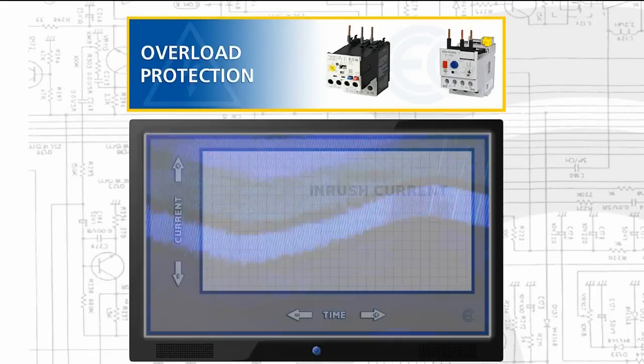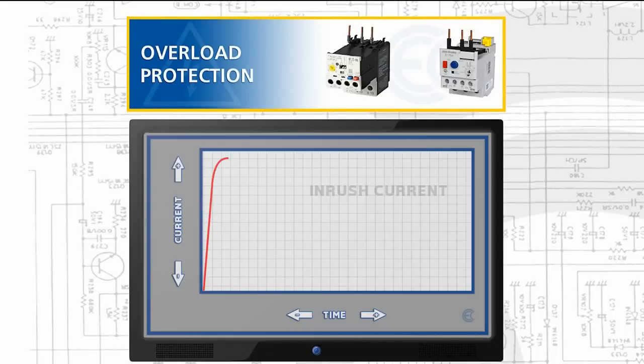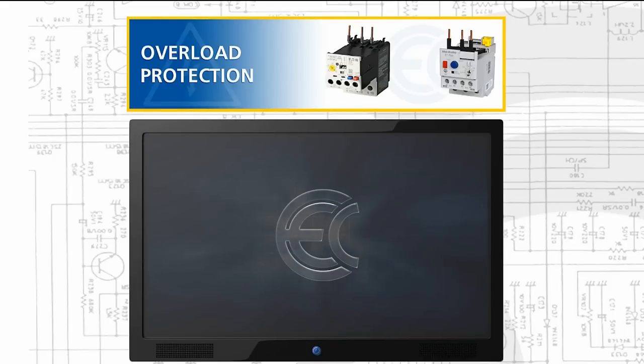For example, some equipment may create inrush currents as it starts up. These inrush currents typically last only a few seconds and rarely cause a problem. So overload relays are used in a motor circuit to protect motors from damage caused by prolonged periods of overcurrent.